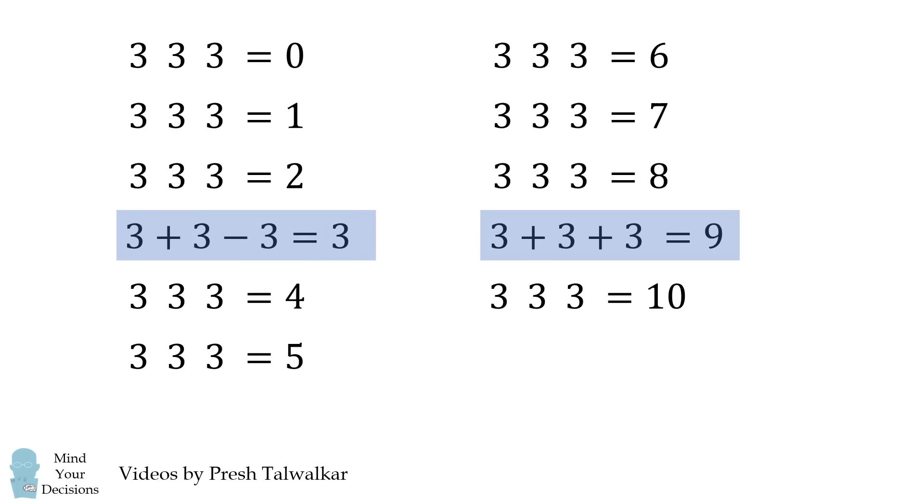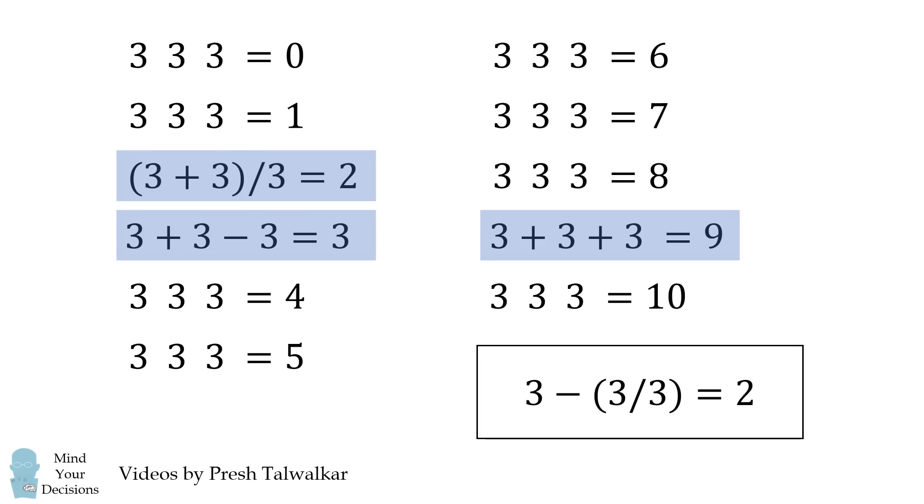Next we can do 3 plus 3 minus 3 to get to 3. Or we could also do 3 times 3 over 3. Continuing, 3 plus 3 is equal to 6. We divide that by 3 and we get 2. Another way is 3 minus 3 over 3. That also gets to 2.